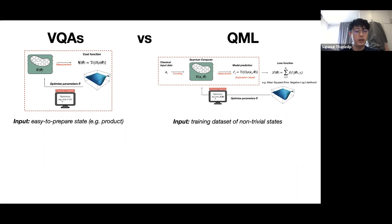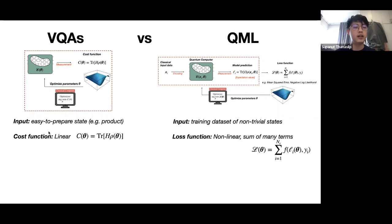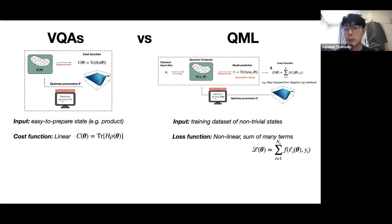Let's compare VQA and QML one by one. In VQA, the input is easy-to-prepare states — like product states. However, in QML, you have a training dataset, and if you have classical data you have to do embedding, while quantum data is usually non-trivial — not product states. The cost function also differs: in VQA you have a linear expectation value, while in QML your loss function is non-linear and is the sum of many terms. The model prediction is in the same form as the VQA cost function as it's also an expectation value, but the total form is non-linear.